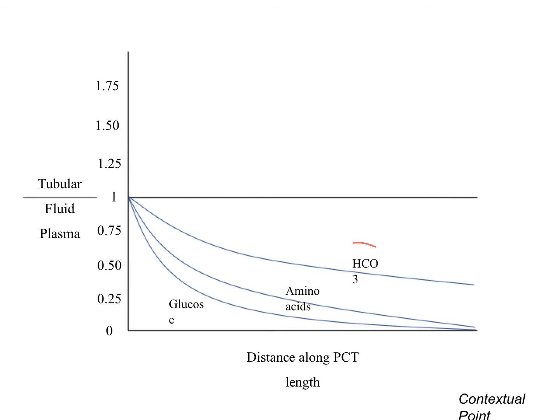Now, bicarbonate. Same logic — we are reabsorbing bicarb along the proximal convoluted tubule, and the bicarb concentration in the proximal convoluted tubule relative to plasma is decreasing.